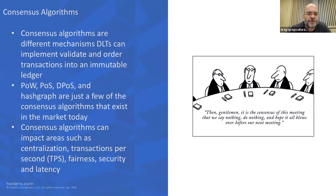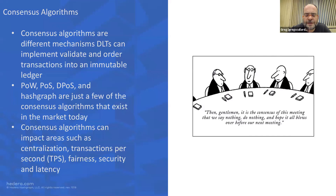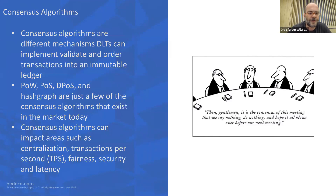Those algorithms are different ways in which a DLT can validate and order transactions into a ledger. There are many more than those explained here — proof of authority, proof of reputation, and so on. The algorithm itself has a significant impact on all areas we care about, such as decentralization, throughput, and fairness. They all come with pros and cons to a smaller or greater extent.